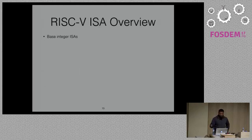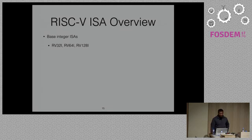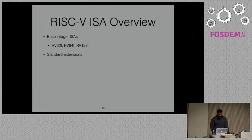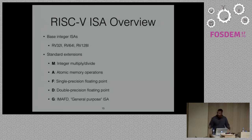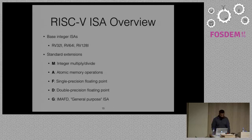There are different base integer ISAs for each word width. The 32-bit RISC-V instruction set is named RV32I, where I stands for integer. 64-bit is RV64I, and 128-bit is RV128I. RISC-V uses one-letter names for extensions: I for integer, M for integer multiply/divide, A for atomic memory operations, F for single-precision floating point, and D for double-precision floating point. These extensions are all lumped into the G ISA — the general-purpose ISA you use to boot Linux or BSD.